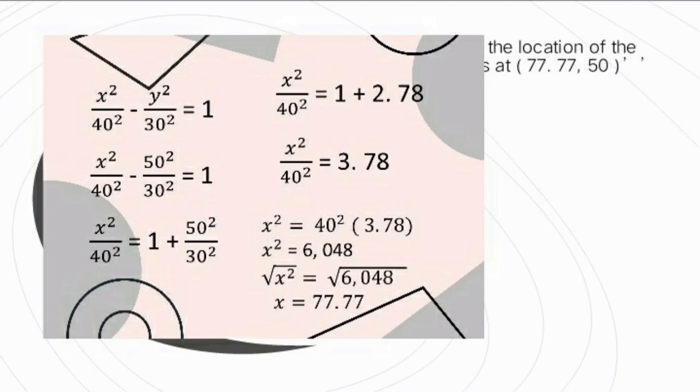40 squared times 3.78 equals 6048. But this is not our final answer because X still has an exponent of 2. To simplify this, we need to find the square root of both sides. The square root of X squared is X, and the square root of 6048 is 77.77. So X equals 77.77. Now we already know the location of the plane. The location of the plane is at (77.77, 50).